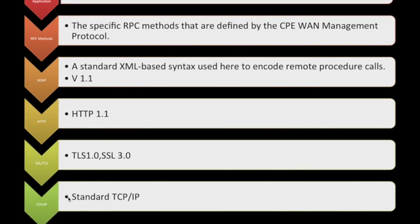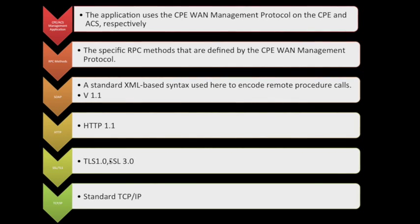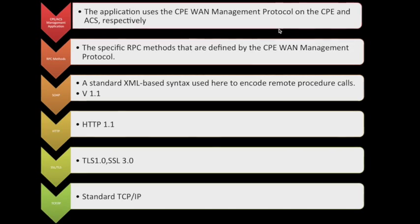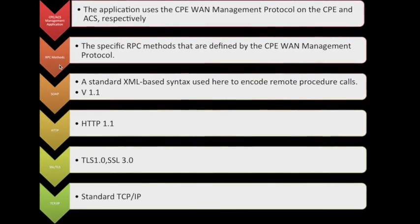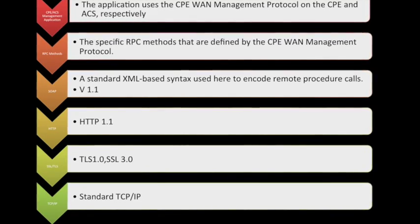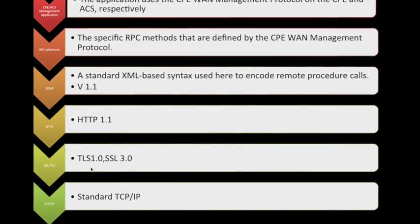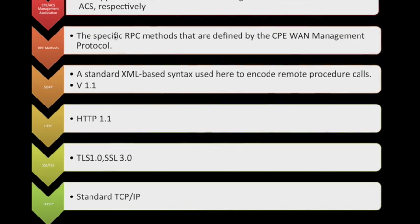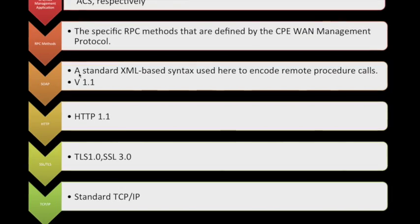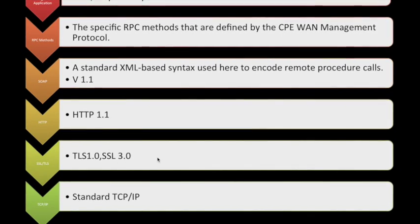Let's look at the protocol stack. TR-069 is a Layer 7 protocol — in the TCP/IP model it operates at Layer 7. At Layer 7 we have HTTP, TLS above that, then SOAP, then RPC, and this forms the CPE WAN Management Protocol. It sends RPC methods encoded as SOAP over HTTP, communicating as SSL/HTTP down to the TCP/IP layer. So the protocol stack has multiple layers: RPC, SOAP, HTTP, SSL/TLS. The RPC methods are defined by the CPE management protocol. HTTP version 1.1, TLS 1.0, and SSL 3.0 are used over TCP/IP.